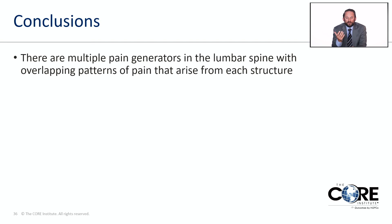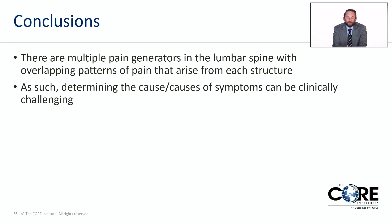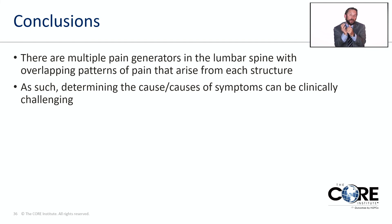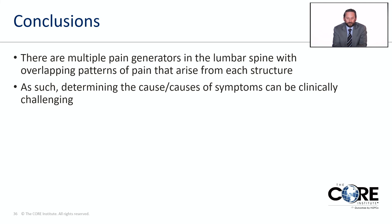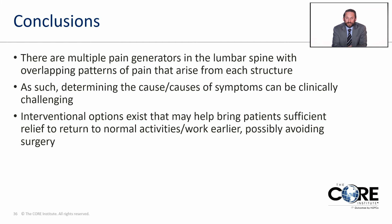There are multiple structures in your back that can cause pain, and they often cause overlapping pain patterns. This can make determining the actual cause challenging, and many patients have more than one cause. I liken chronic back pain to an onion — you peel away one layer and find another underneath. Interventional options exist that are low risk, done in the office, and can bring patients a lot of relief, allowing them to return to normal life and work and ideally avoid surgery. Thank you for your attention.